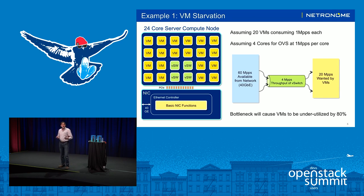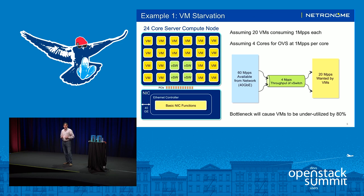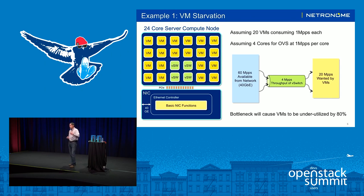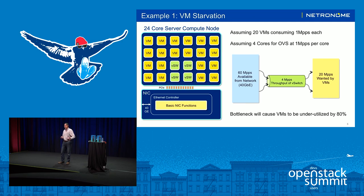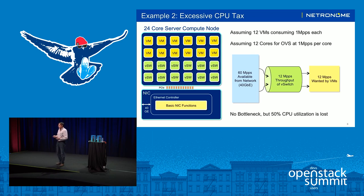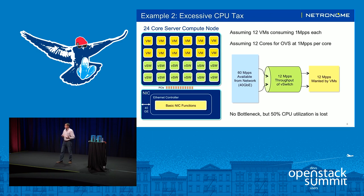To illustrate in more detail: take a typical server-based networking data path running on four CPU cores — you get about 4 million packets per second. In a typical 24-core modern server CPU, you have 20 cores available for VMs. At a VM workload of 1 million packets per second, which is not unusual, those VMs would be asking for 20 million packets per second, yet the data path can only deliver 4 million. You have a bottleneck and your applications are running in a starving state. You can try throwing more cores at the problem — 12 cores delivering 12 million packets per second to 12 VMs — but now you've taken up half your server CPU not running applications. That's not good utilization of your cloud infrastructure resources.